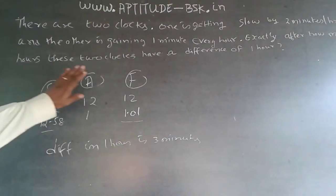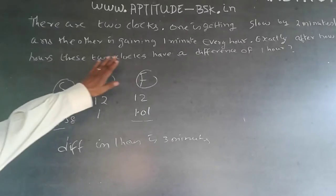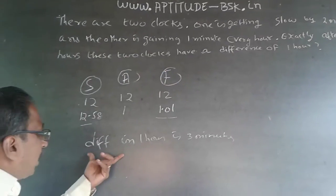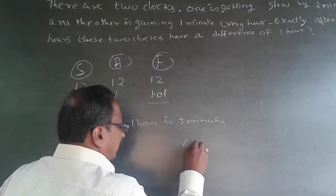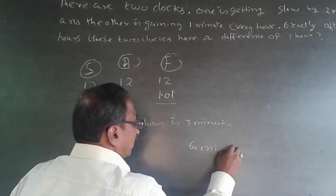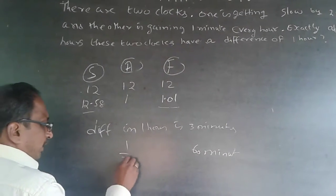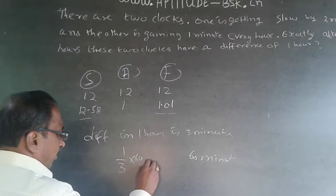The question is, exactly after how many hours these two clocks have a difference of one hour. So, in one hour, the difference is three minutes. To have a difference of 60 minutes, how much time will it take? So, it will be 1 by 3 into 60 will be 20 hours.